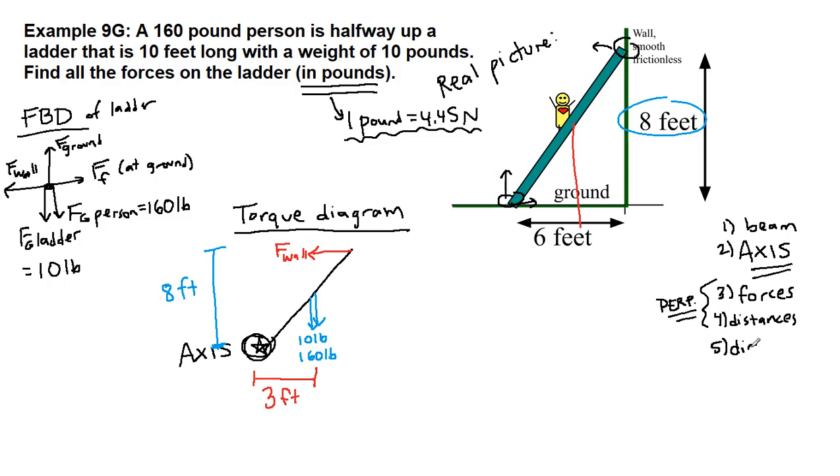The last step of our torque diagram process is the directions, clockwise and counterclockwise. So if the wall suddenly disappeared, then the ladder would fall, and it would fall by rotating, and it would rotate in a clockwise direction. So both of those forces that are acting there are both in the clockwise direction. If suddenly gravity wasn't there, but the wall was still pushing, if this was the only force acting, it would rotate the ladder in a counterclockwise direction.